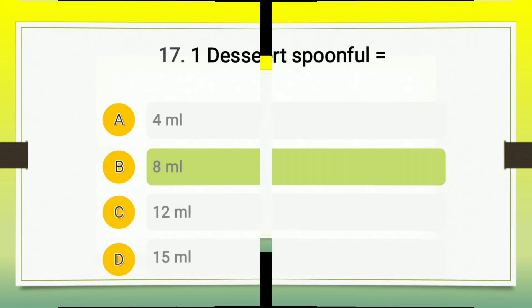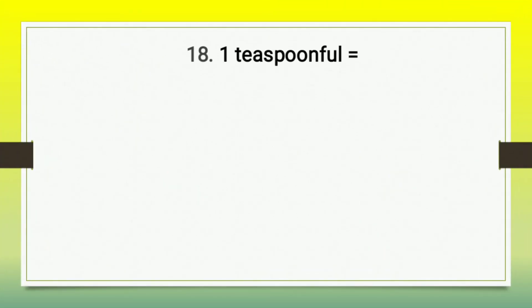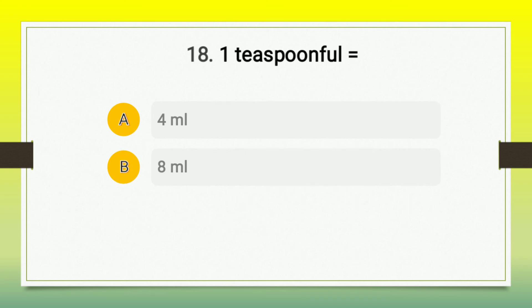Question number 18: one teaspoonful is equal to — A) 4 ml, B) 8 ml, C) 12 ml, D) 15 ml. The right answer is option A, 4 ml.